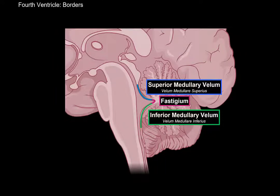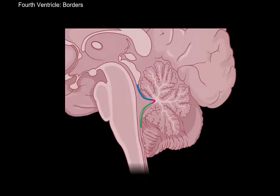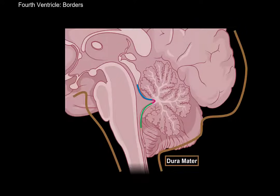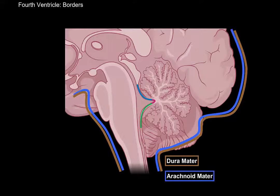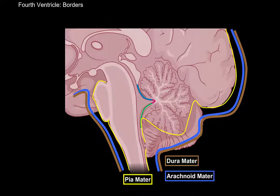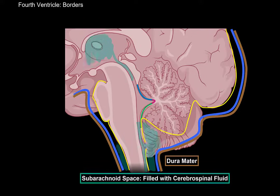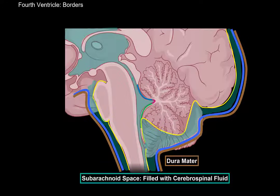The lower part of the roof has additional structures we need to address. To understand them, we need to recall our three layers of the meninges. The outermost layer is the dura mater. Underneath is the arachnoid mater. Then there is the pia mater, a very thin and delicate layer covering the tissue of the central nervous system. Between the pia mater and the arachnoid mater is the subarachnoid space, which is filled with cerebrospinal fluid that delivers nutrition to the brain and spinal cord and removes waste products.